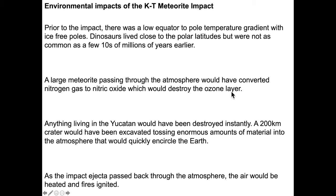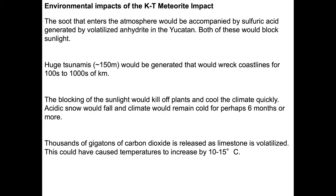A large meteorite passing through the atmosphere would have converted nitrogen gas to nitric oxide, which would have destroyed the ozone layer — exposing all the survivors to ionizing radiation. Anything living in the Yucatan would have been destroyed instantly. A 200-kilometer crater's worth of material would have been tossed into the atmosphere at high temperature, quickly circulating around the world. As the impact ejecta passes back through the atmosphere, the air would become heated and fires potentially ignited. The soot that enters the atmosphere would be accompanied by sulfuric acid, generated by the volatilization of anhydrite in the Yucatan — CaSO4, nearly the same kind of stuff drywall is made of. Both would block sunlight. Huge tsunamis of 150 meters would be generated, destroying coastlines for hundreds to thousands of kilometers. The blocking of sunlight would kill off plants, cooling the climate — leading to what was known in the 1980s as a nuclear winter.